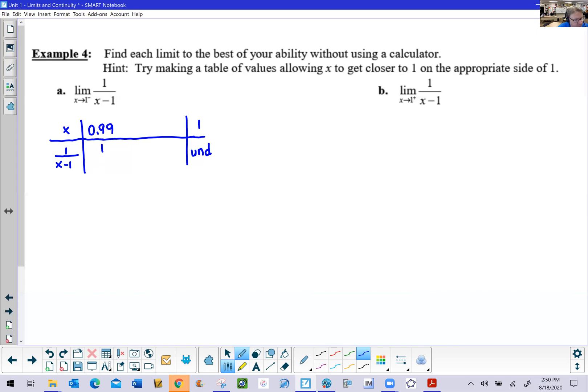Well, we end up getting 1 over 0.99 minus 1, which would be negative 0.01. Now granted, that's still underneath 1, so we might need to simplify that. Upon doing so, we would end up with negative, and then 1 divided by 1 over 100 is just negative 100.